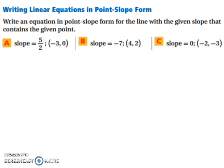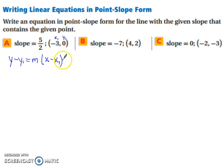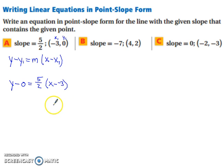Let's practice writing linear equations in point slope form. Point slope form is y minus y₁ equals m times x minus x₁. We have our x₁ and y₁. Substituting in our values: y minus 0 equals our slope of 5/2 times x minus negative 3. You can simplify this to y equals 5/2 x plus 3.